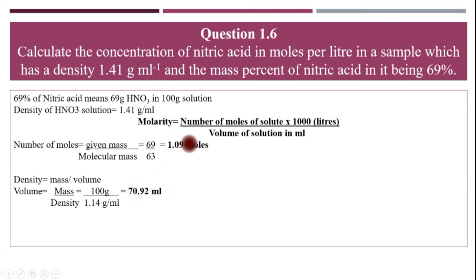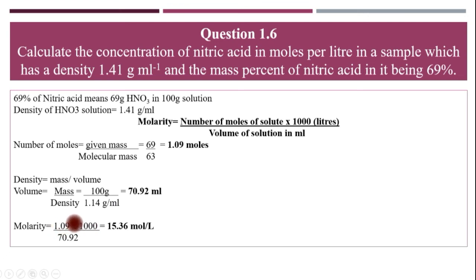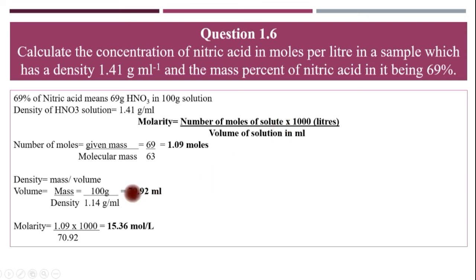Now we substitute both values into the molarity formula: 1.09 moles multiplied by 1000, divided by 70.92 ml. Alternatively, you can convert 70.92 ml directly to liters (0.07092 L) and omit the 1000 factor — either way you get the same answer. The calculated molarity is 15.36 mol per liter.